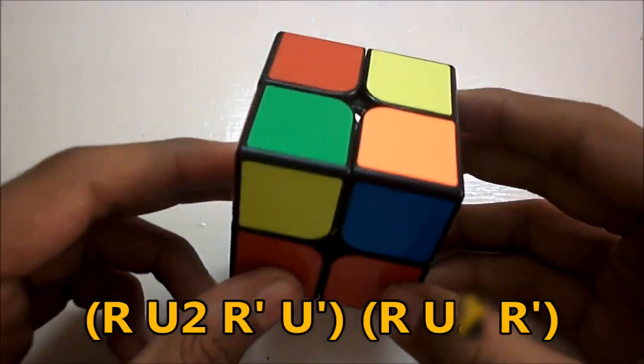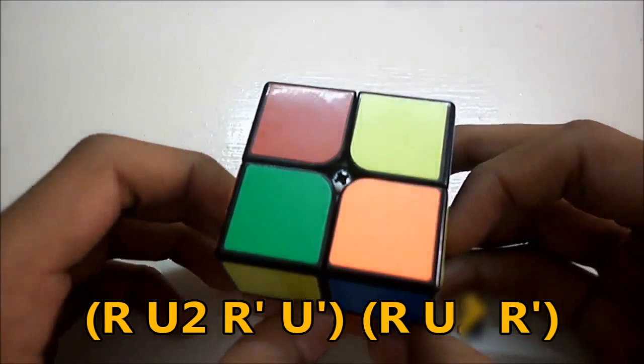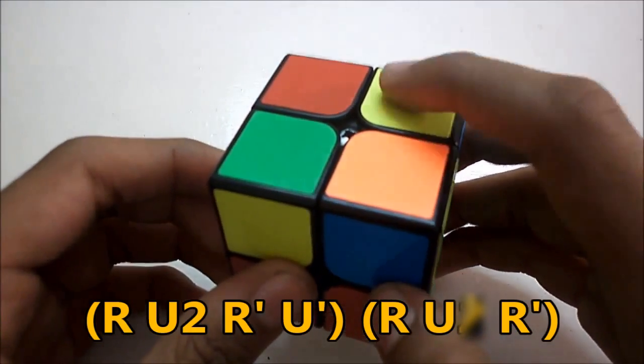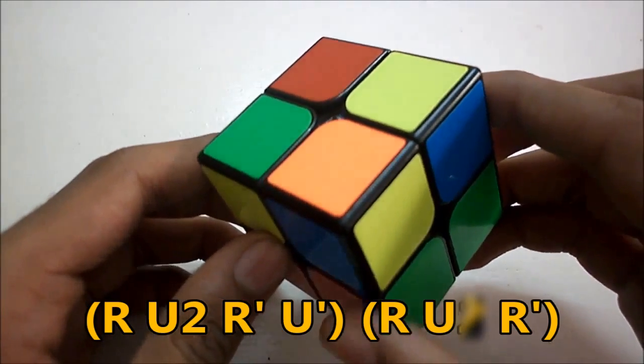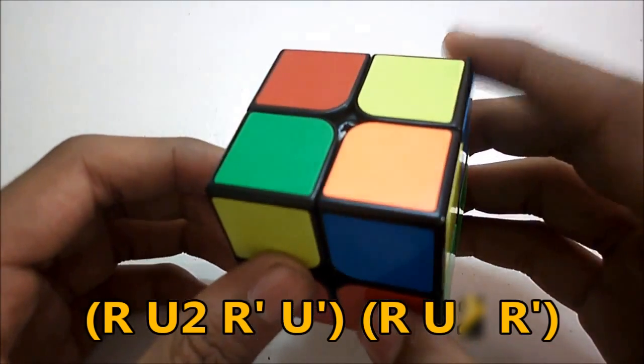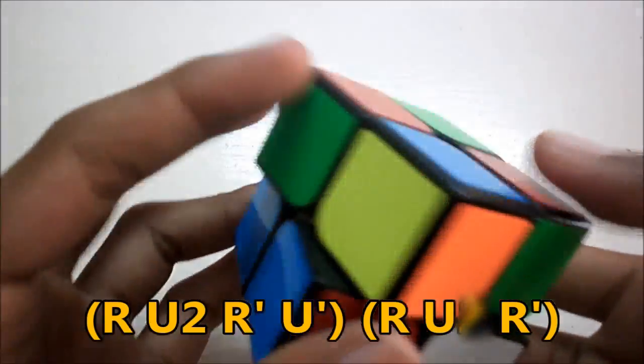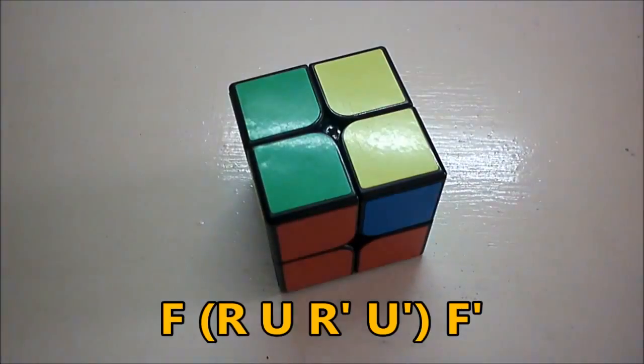And that's all. So this next case is the Antisune which is basically a Sune but backwards. It's kind of similar to the previous case but now it's over here. And hold it like this with this corner on the right and the solved corner over here and perform the algorithm R U2 R' U' R U' R' and that solves it.